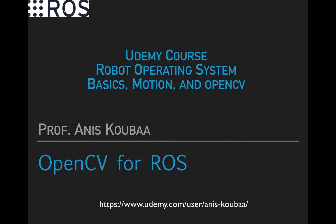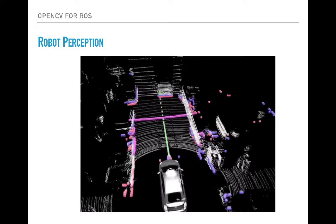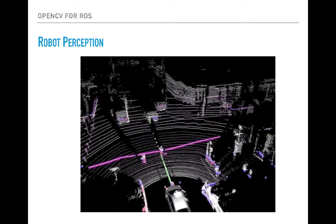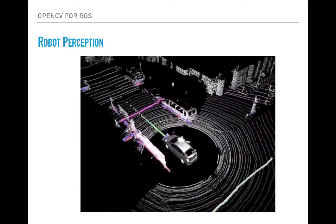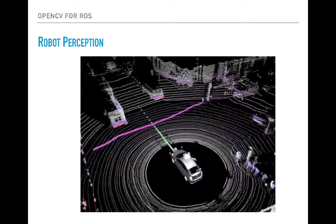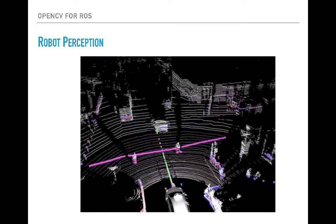Robot perception is a popular field in robotics based on computer vision. Computer vision includes methods for acquiring, processing, analyzing, and understanding digital images. Typically, a robot uses a camera to see the world around it, and this camera will provide the robot with a feed of images that it needs to process so as to extract useful information.